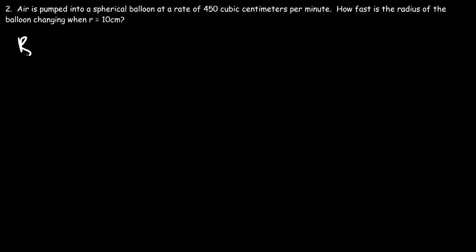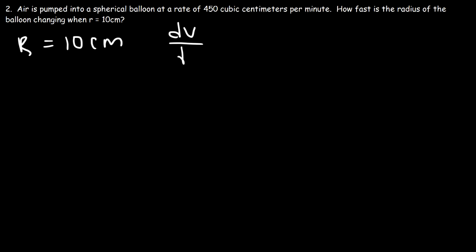Number two: air is pumped into a spherical balloon at a rate of 450 cubic centimeters per minute. How fast is the radius of the balloon changing when r is 10? The radius is 10 centimeters. The 450 cubic centimeters per minute represents the rate at which the volume of the balloon is changing, dv/dt. Because air is being pumped in, the balloon is expanding, so it's positive 450, not negative 450.